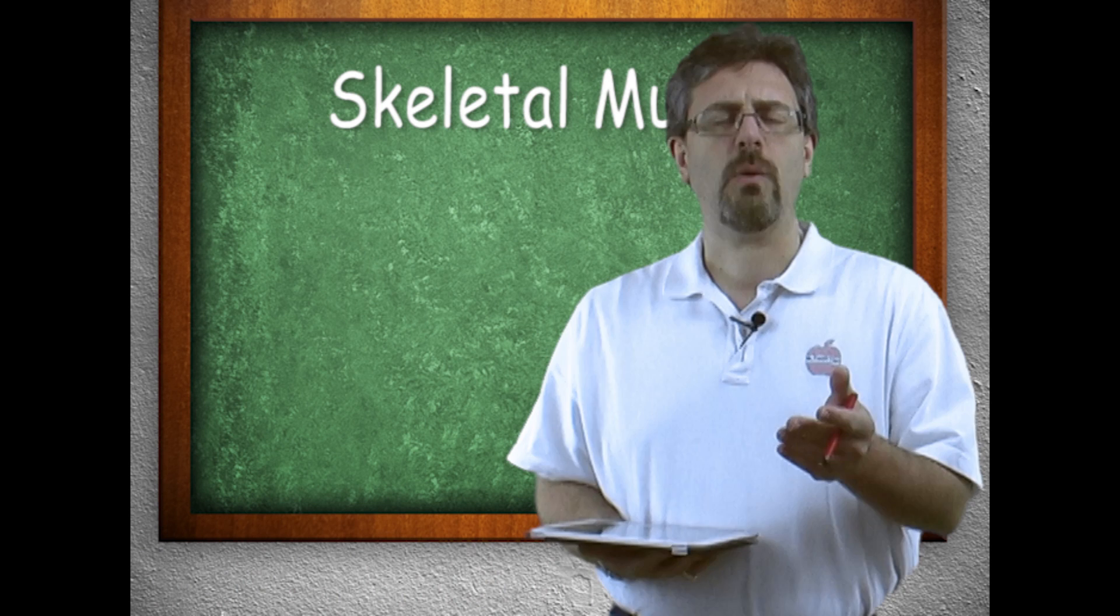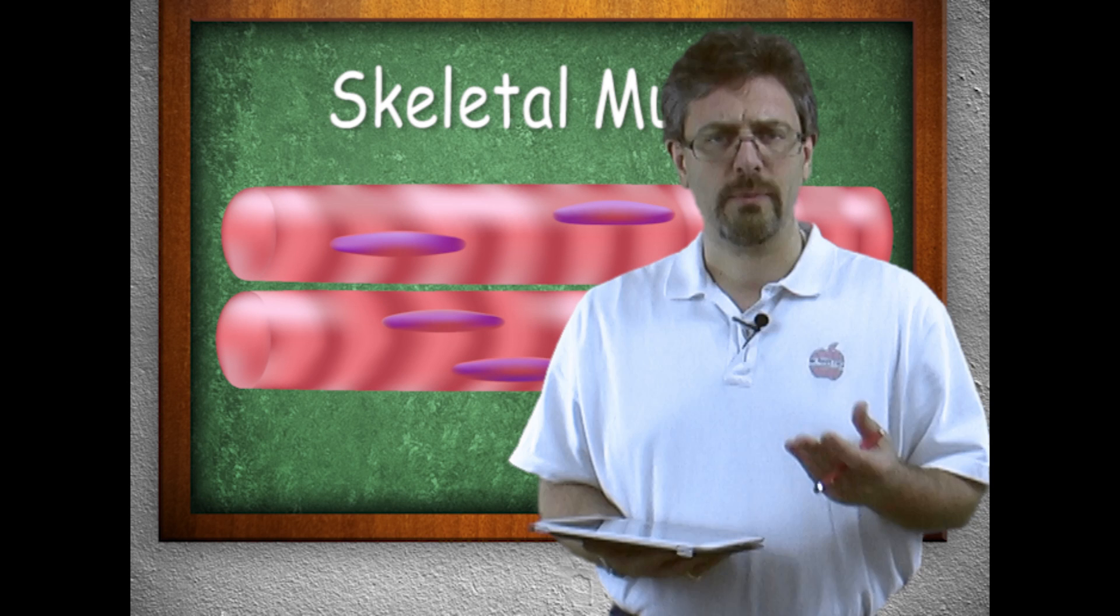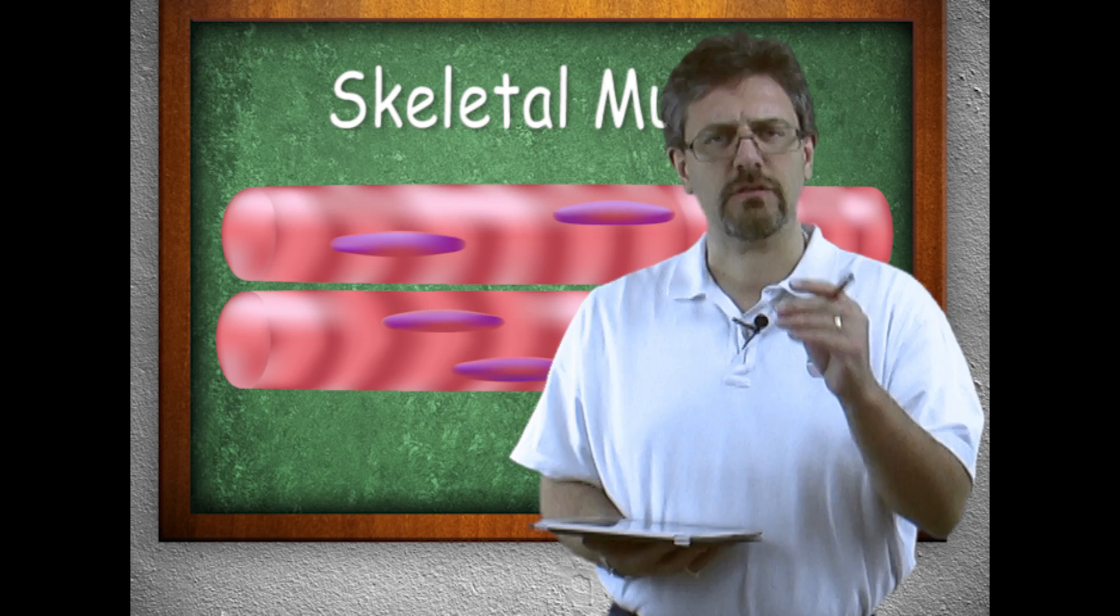The reason why it's striated is because it looks striated under a microscope. What we see are alternating bands of light and dark. These alternating bands are caused by the contractile elements, the actin and myosin, which we will look at before this video is over. And that is what's going to cause this light and dark looking to the striated muscle tissue.